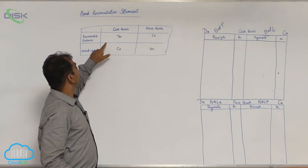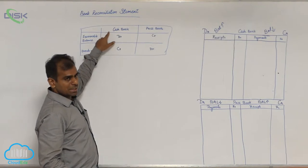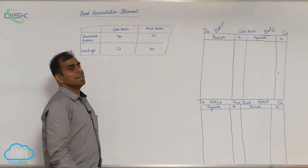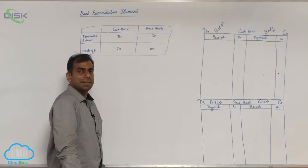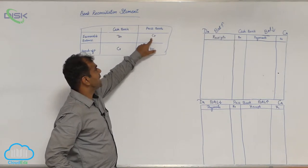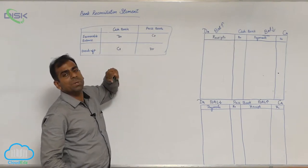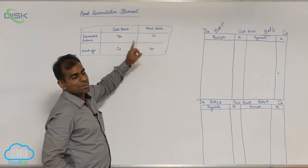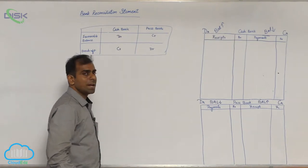If you get the bank column balance as credit according to your cash book while balancing, we call it an overdraft. Similarly, in a pass book, if your money is there in the bank, your pass book will show credit balance. So, credit balance as per pass book is favorable balance. When the bank has given you a temporary loan, your pass book will show debit balance, which we call unfavorable balance or overdraft.